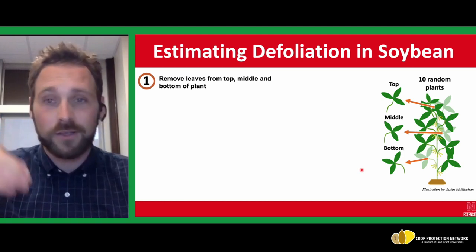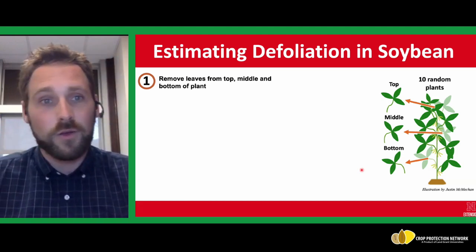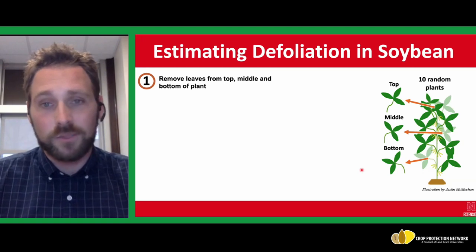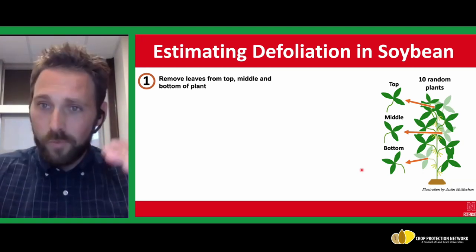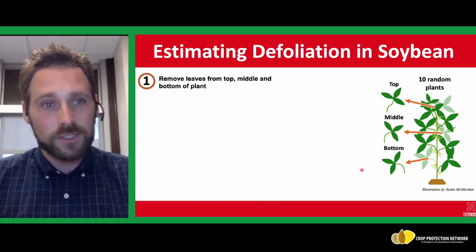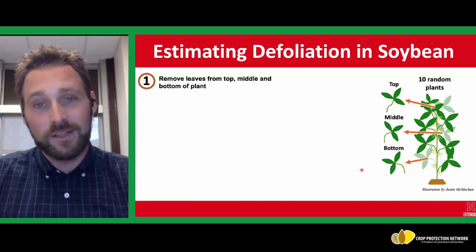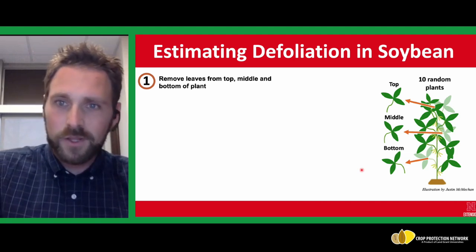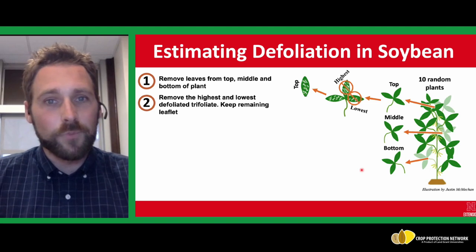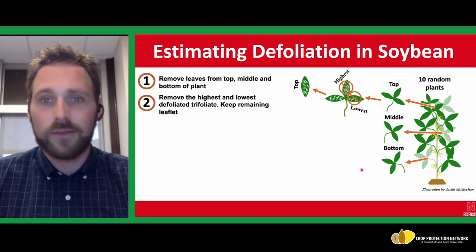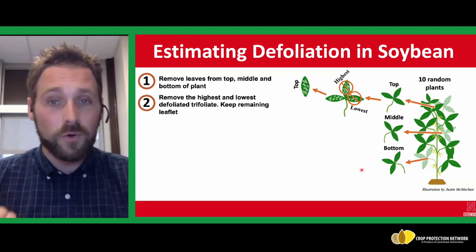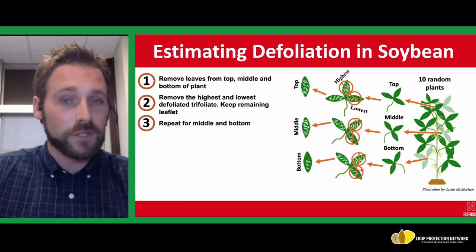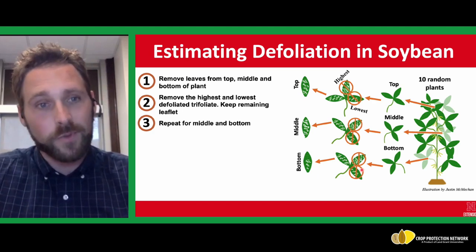Bean leaf beetles and Japanese beetles are up near the top of the plant. Other insects like loopers can be present near the bottom of the plant. It's important to take the whole plant into account because, especially with growers doing windshield scouting, they can see a lot of damage along the edge of the field, but it's actually only the top part of that canopy that's receiving injury. For each leaflet, we want to pull off only one from that particular set, removing the highest defoliated and lowest defoliated and taking the average leaflet. We do this for each of the leaflets, for 10 random plants in one spot in the field.